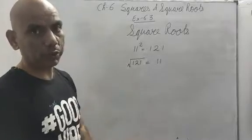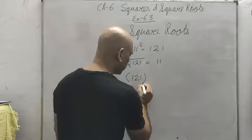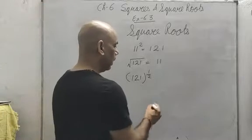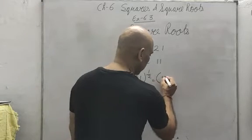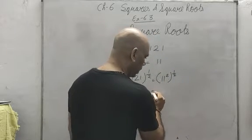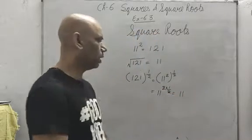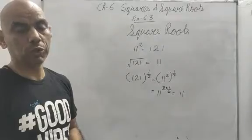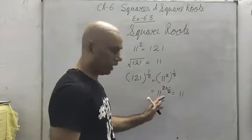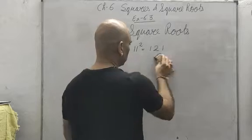The square root of 121 is 11. Because square root in exponent form is 1 by 2, and 121 is the square of 11. Power to the power is multiplied: 2 into 1 by 2 gives 11 to the power 1. So this way square roots are calculated, but we will learn various other methods.